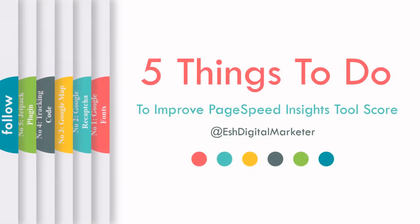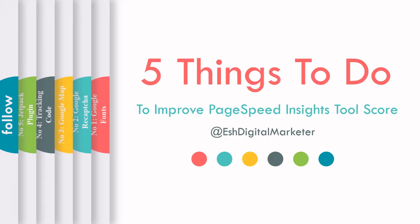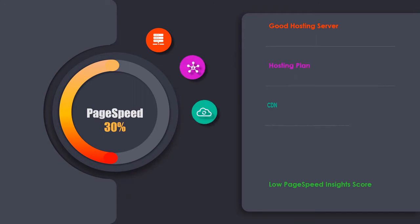Hi guys, you might have heard about Core Web Vitals and page experience becoming a ranking signal. The algorithm is not yet updated, but Google has given plenty of time to work on it. After that, we use the PageSpeed Insights tool to check website performance.